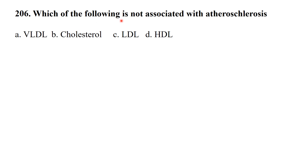Which of the following is NOT associated with atherosclerosis? The answer is the good cholesterol — HDL, high density lipoprotein. High density lipoprotein is called good cholesterol, and it is not associated with atherosclerosis, i.e., the hardening of the arteries.